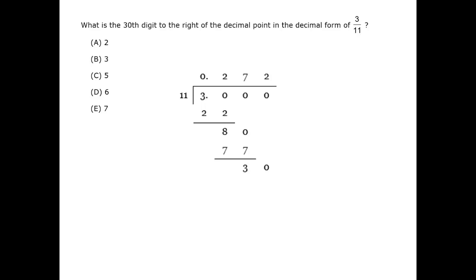We can determine the 30th number to the right of the decimal point from the pattern. The first digit to the right is a 2, the second digit to the right is a 7, and the third digit is a 2. Evidently, the odd places have a 2, and the even places have a 7. The 30th place is an even place, so the digit there will be a 7. The correct answer is E.